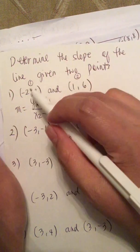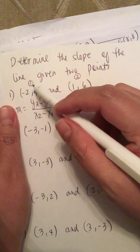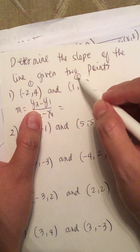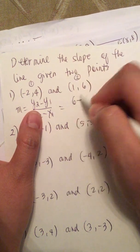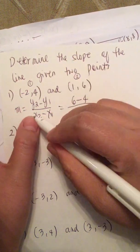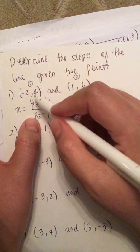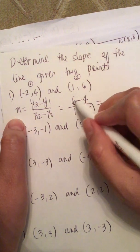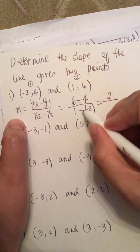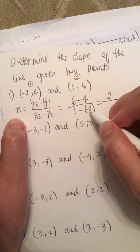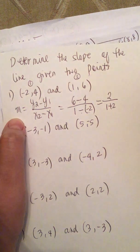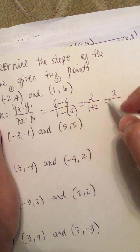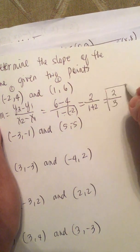It doesn't matter which one is point 1 and which one is point 2, but you label them so you don't mix them up. So y2 is 6 and y1 is 4, giving us 6 minus 4 over x2 minus x1, which is 1 minus (-2). That gives us 2 over 1 plus 2, which is 2 over 3. So the slope is 2/3.